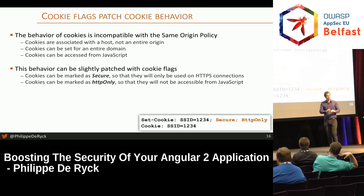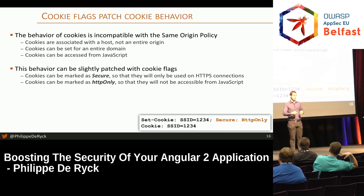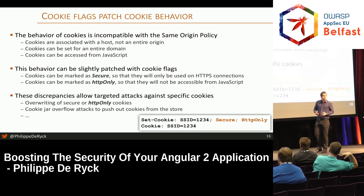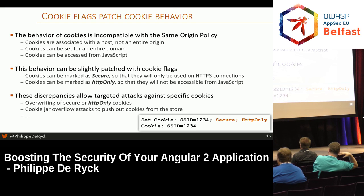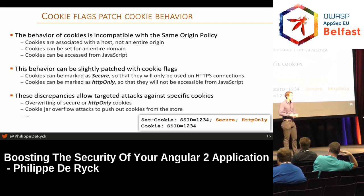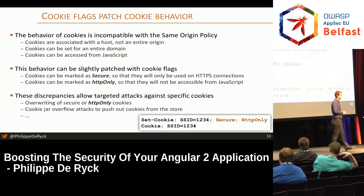However, there's a discrepancy with this system. The Set-Cookie header contains all the information, but when the server gets the cookie back, there's no information attached. The server doesn't know whether it was a secure cookie, where it came from, or whether this was an attack that resulted from a cookie jar overflow or something like that. Essentially, there's a mismatch and that still leaves a lot of attack surface. That's why the smart people building the web platform came up with a new specification called cookie prefixes.